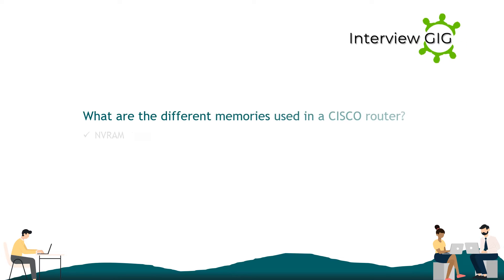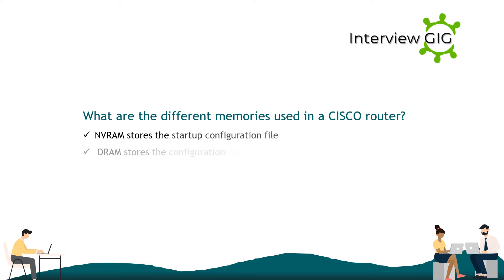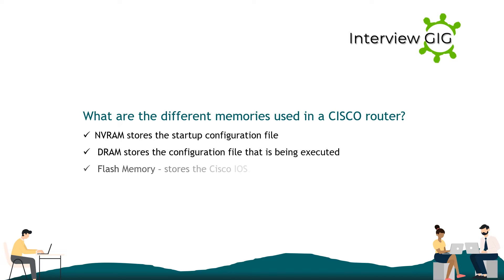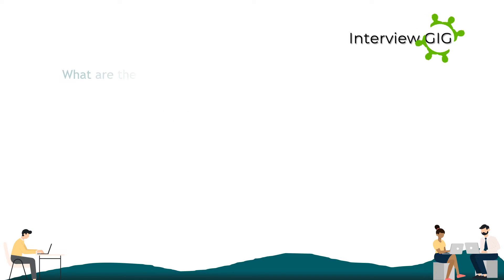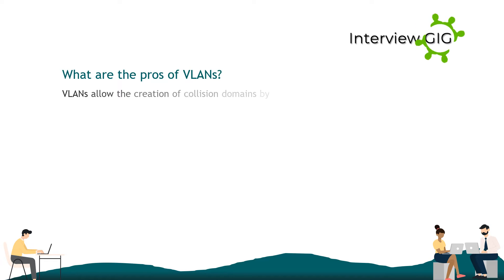What are the different memories used in a Cisco router? NVRAM stores the startup configuration file. DRAM stores the configuration file that is being executed. Flash memory stores the Cisco IOS.